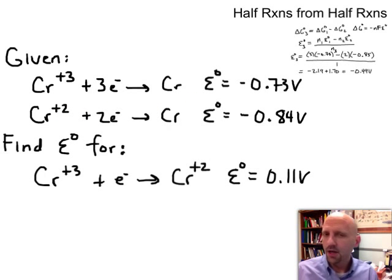We're going to combine them, not to get a complete redox reaction, but to make a new half reaction. So you see here we've got chromium-3 to elemental chromium, chromium-2 to elemental chromium. And what I want to do is I want to go from chromium-3 to chromium-2.